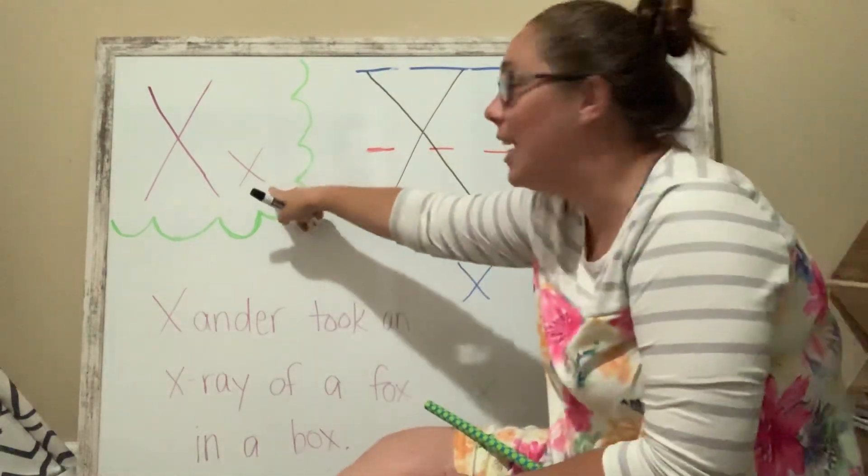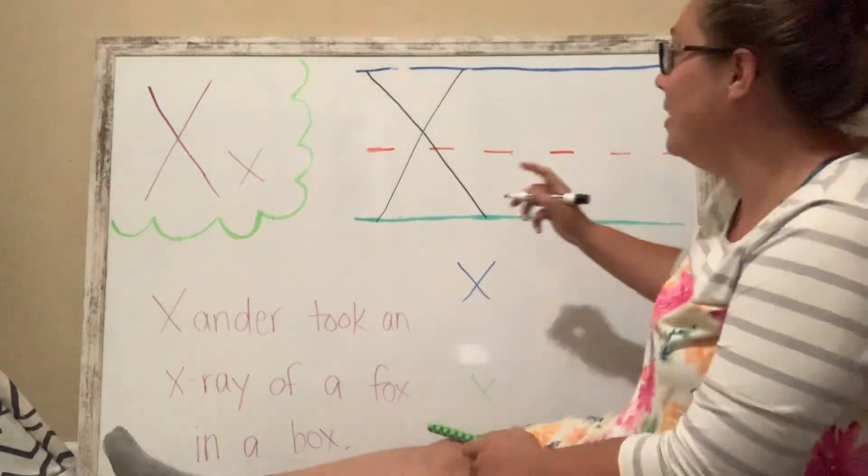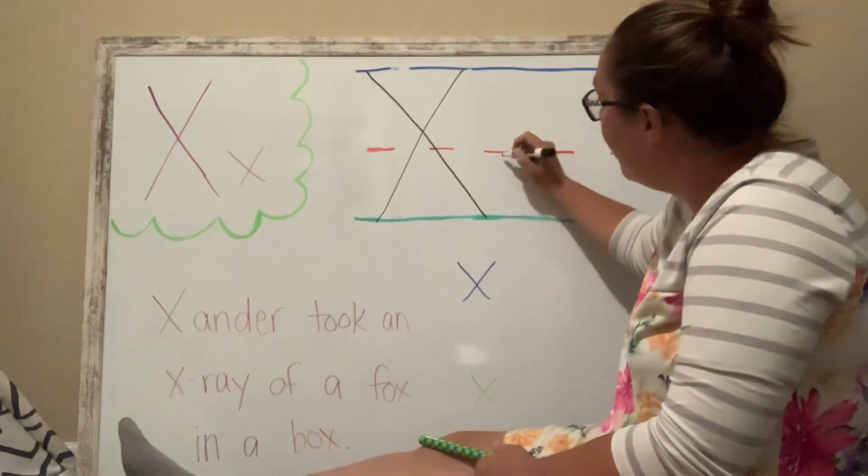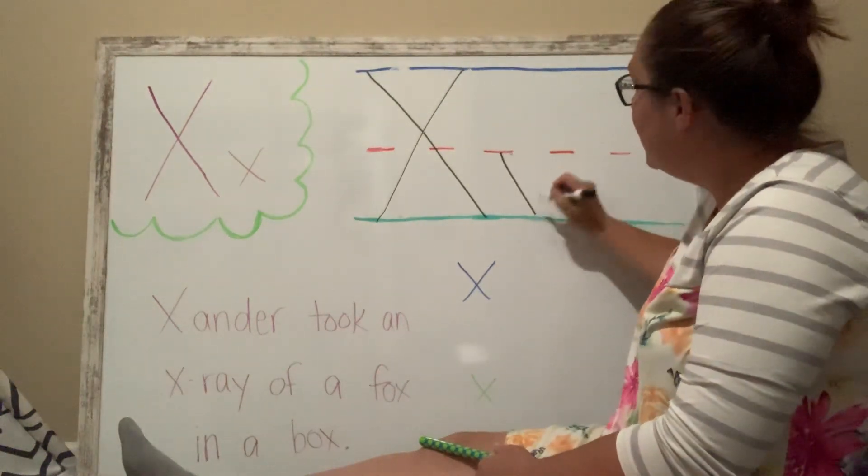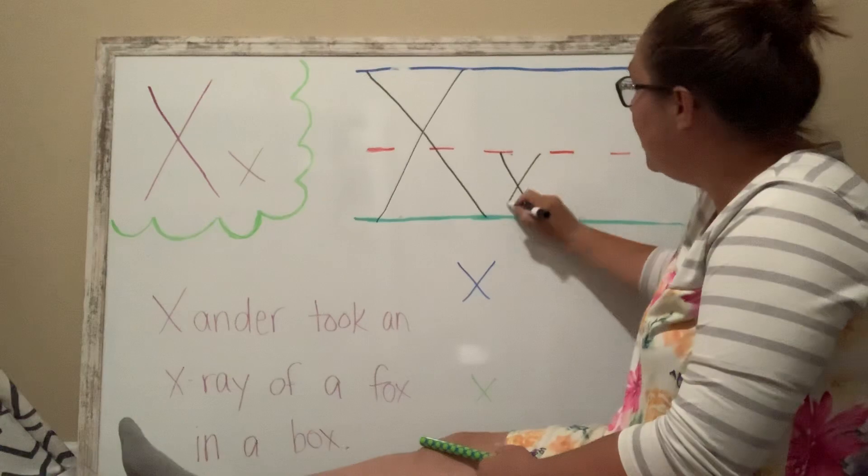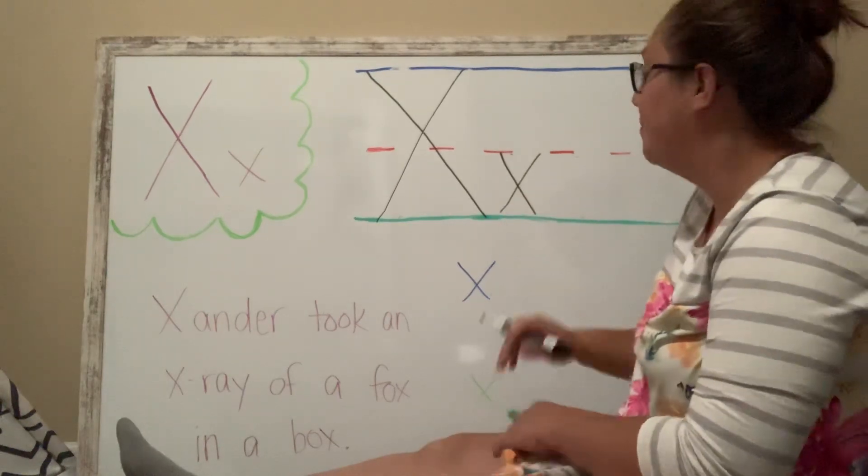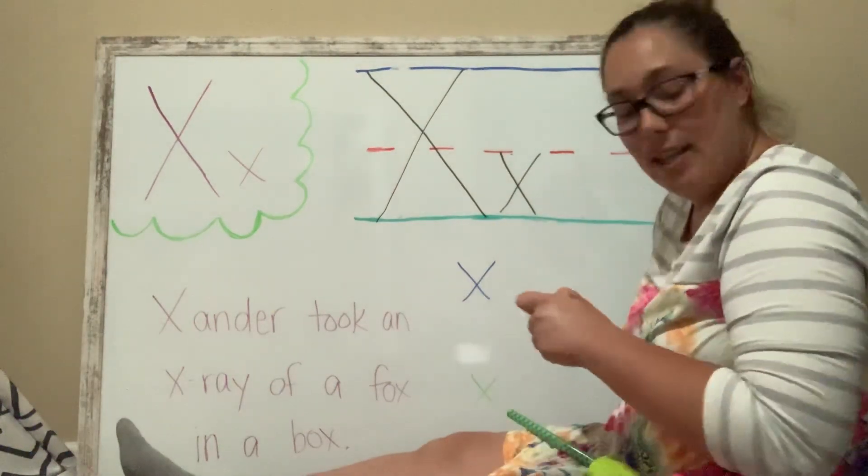Does the lowercase X look the same? Yeah, it's just a little smaller. So we're going to start at the fence, diagonal line down, and diagonal line across. X. X.